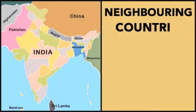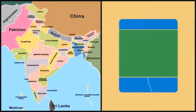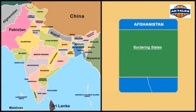There are 9 neighbouring countries of India. The Indian state Ladakh shares the border with Afghanistan. The border length is 106 km.